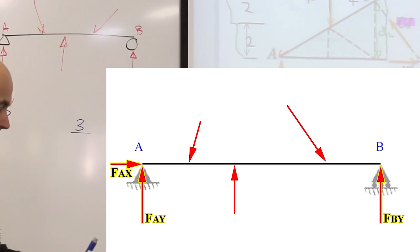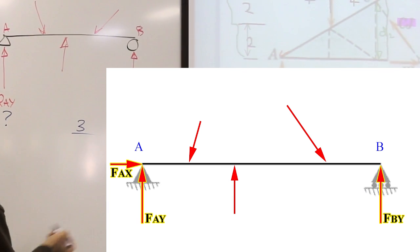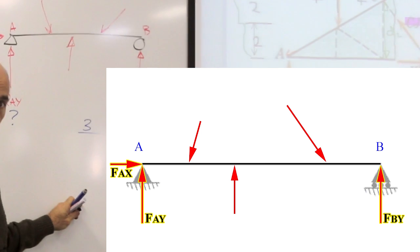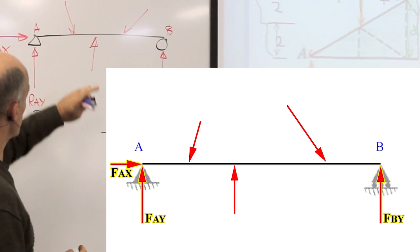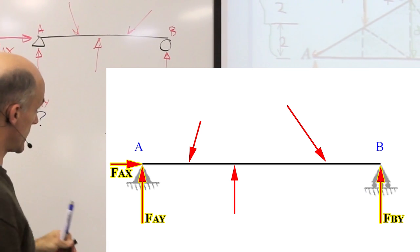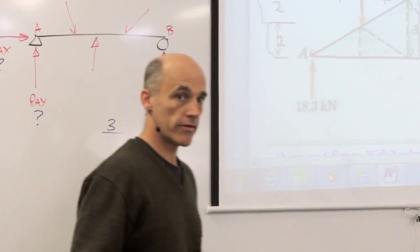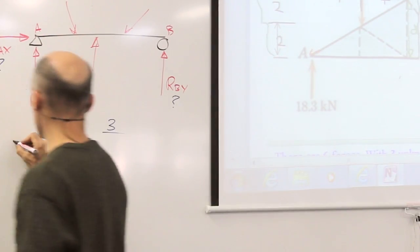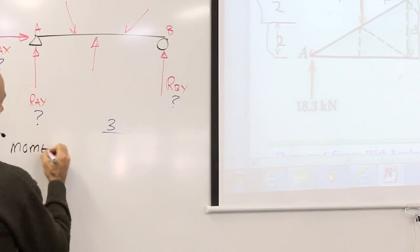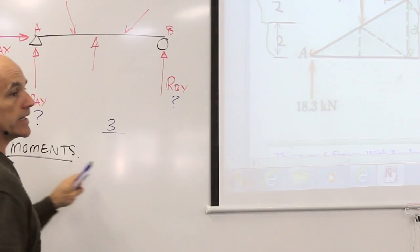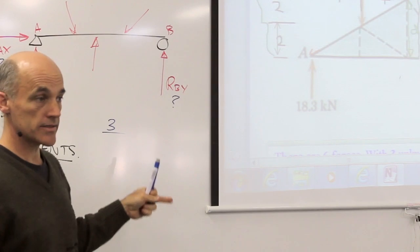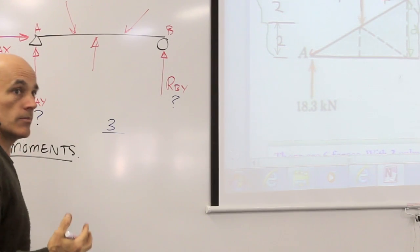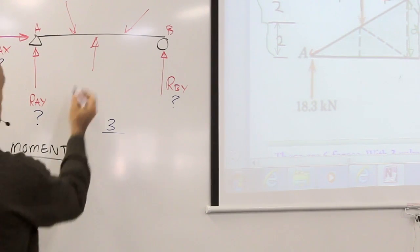Three unknowns is a problem because we can't draw a force polygon with three unknowns. We can only draw a force polygon with two unknowns. So I have to eliminate one of the unknowns. How do I do that? What's the trick for a non-concurrent force question? The trick is the moment equation.